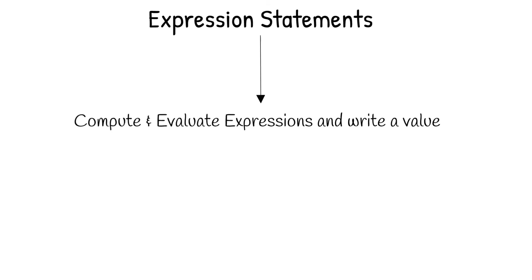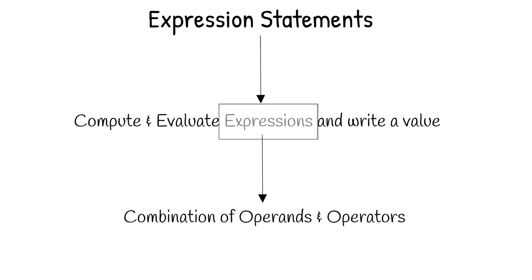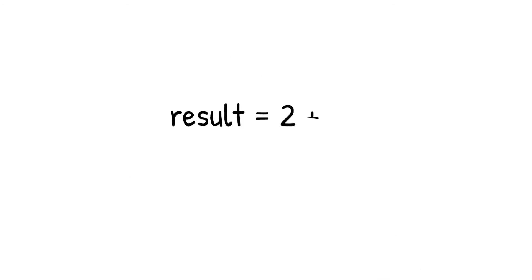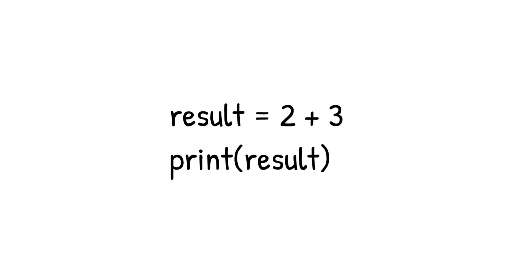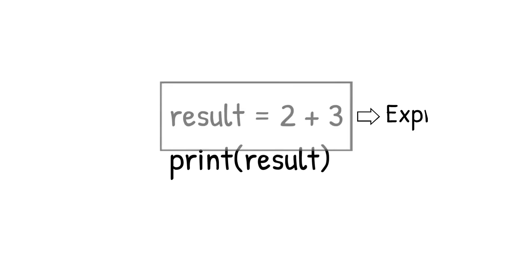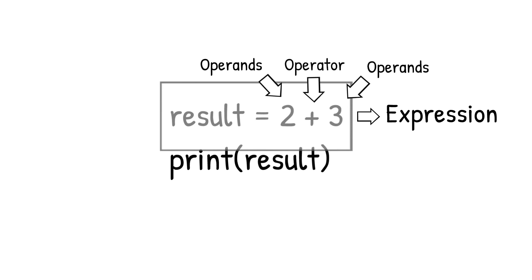Expression statements are used to compute or evaluate expressions and write a value. An expression in Python is a combination of operands and operators. For example, 2 + 3 is an expression because it contains 2 and 3 as operands and the plus symbol as an operator. This expression will be evaluated by the interpreter, and in this case the resultant value will be 5.